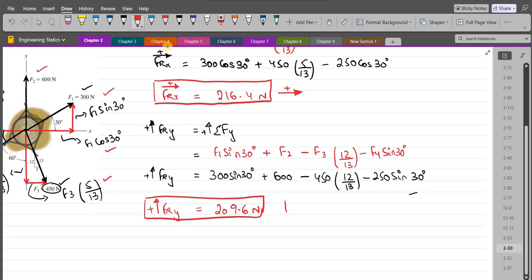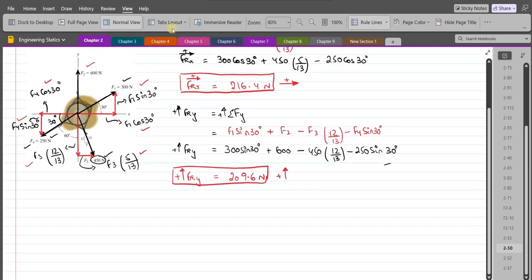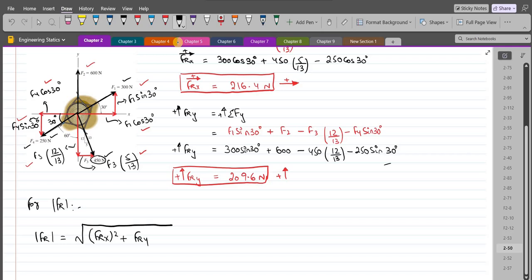FRy is directed in the positive y-axis in the upward direction. Now we have to find the magnitude of the resultant force, so we can use the Pythagorean theorem. We have for magnitude FR equals square root of FRx squared plus FRy squared.